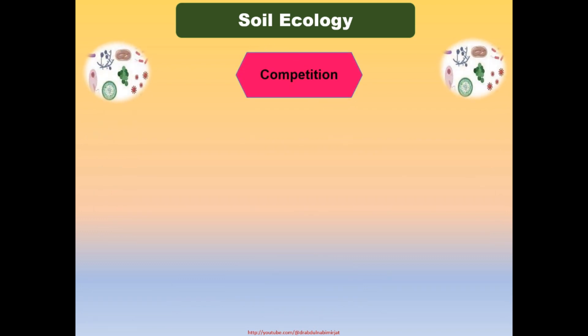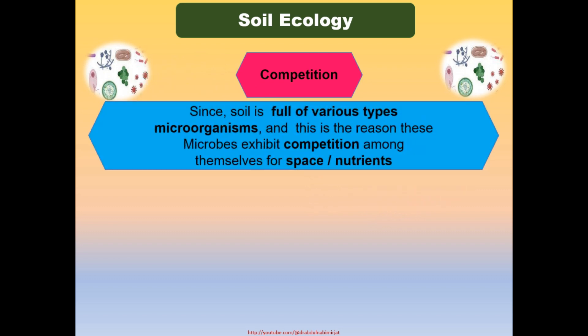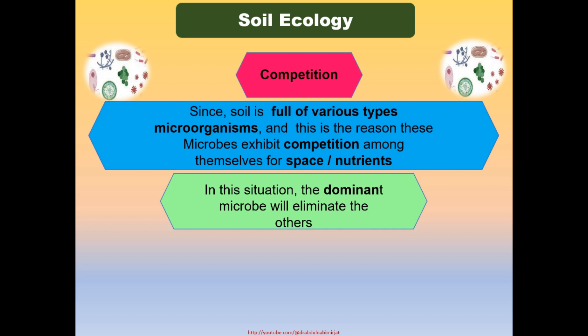Competition: since soil is full of various types of microorganisms, they exhibit competition among themselves for space and nutrients, and the dominant microorganisms will eliminate the others. For example, exogenous nutrients are required for germination of chlamydospores of Fusarium fungi in soil, but other fungi and bacteria deplete these essential nutrients required for spore germination, thereby hindering spore germination of Fusarium and decreasing their population. Some soil bacteria also compete for space and suppress the growth of fungi in soil.